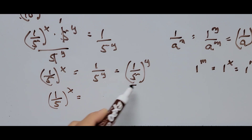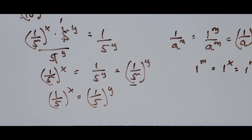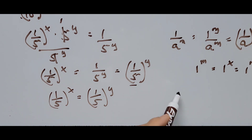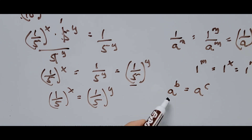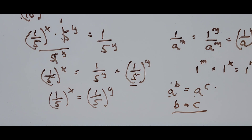The bases on both sides are the same: (1/5). Using the formula: if a^b equals a^c, and the bases are the same, then we can equate the exponents — b equals c. Therefore x is equal to y. That is our final answer.